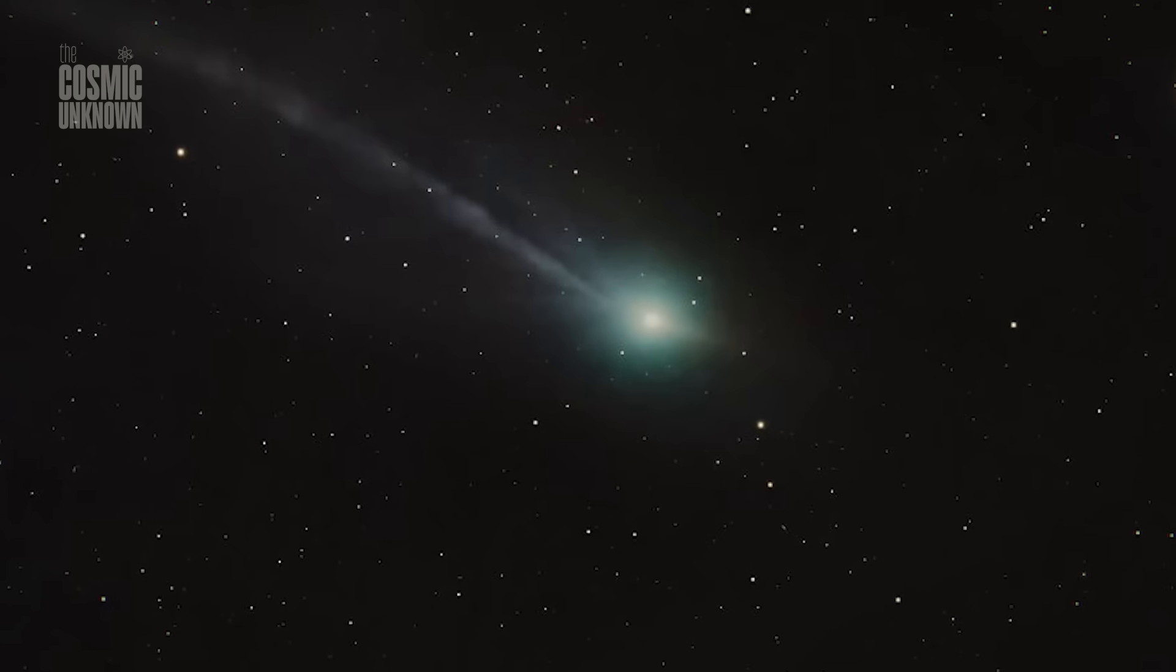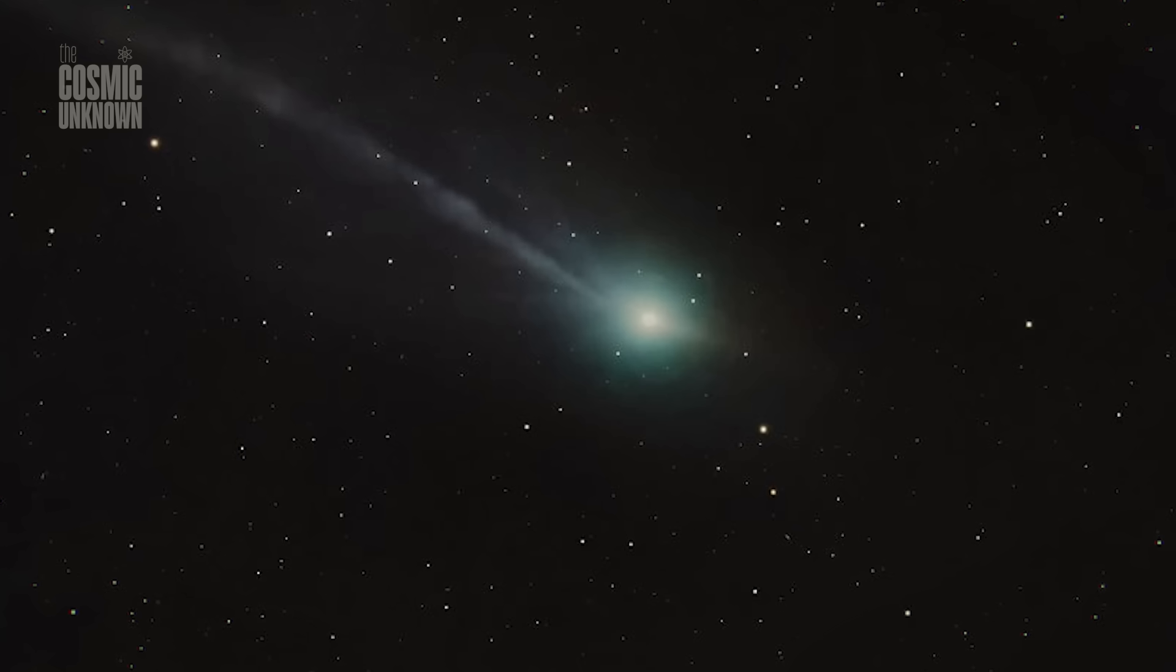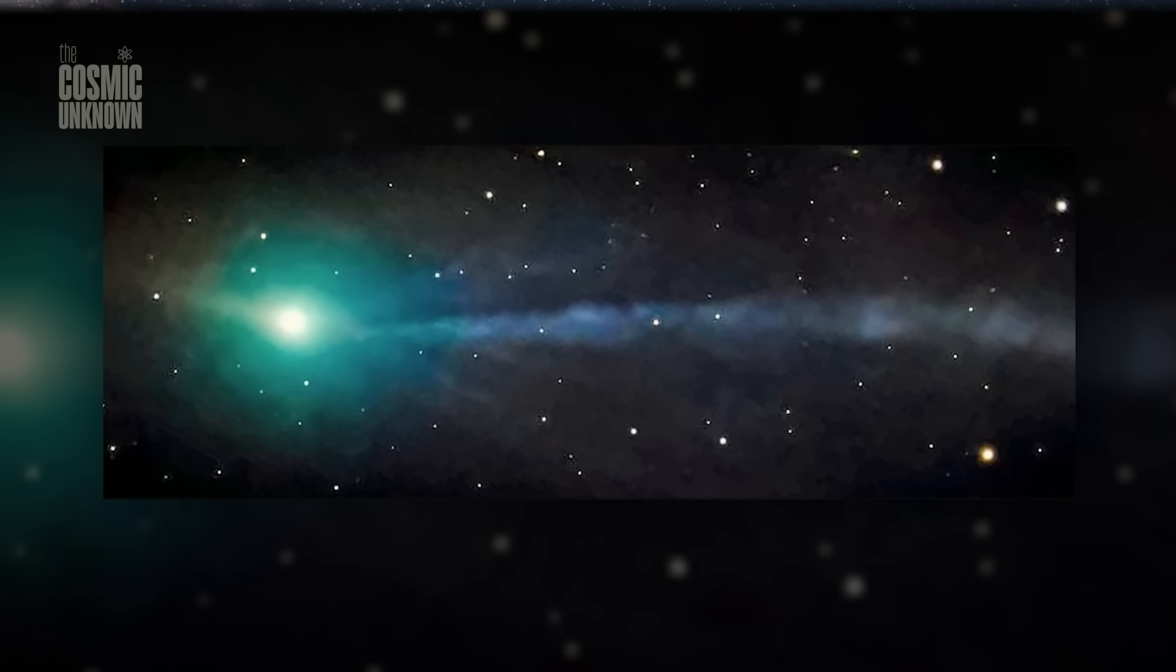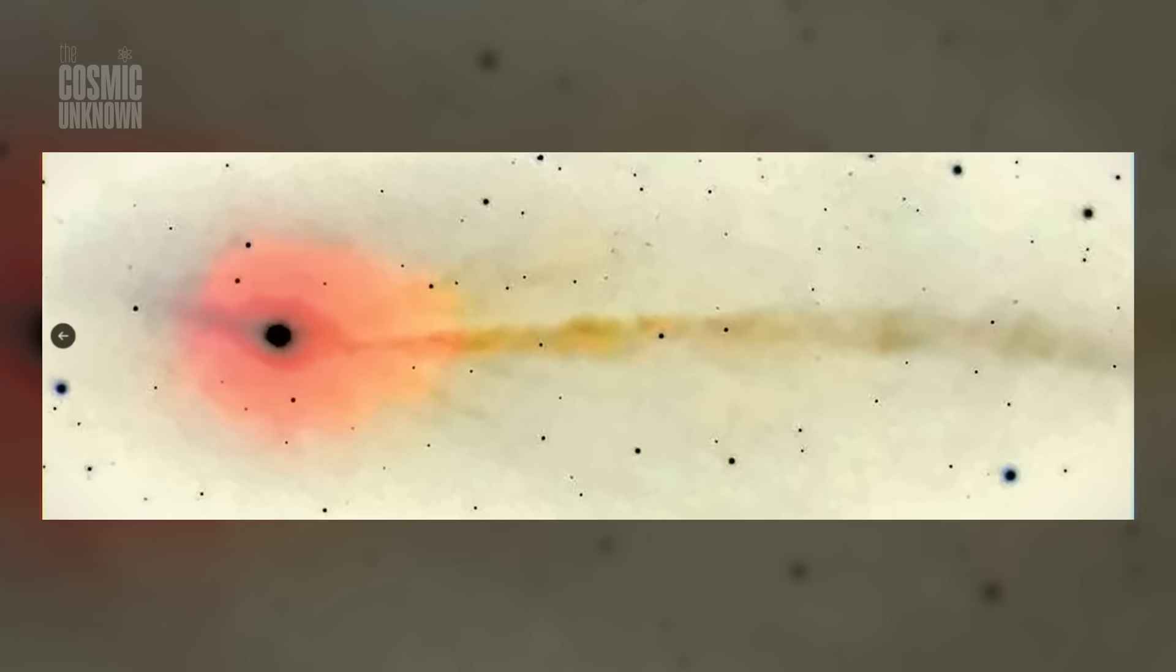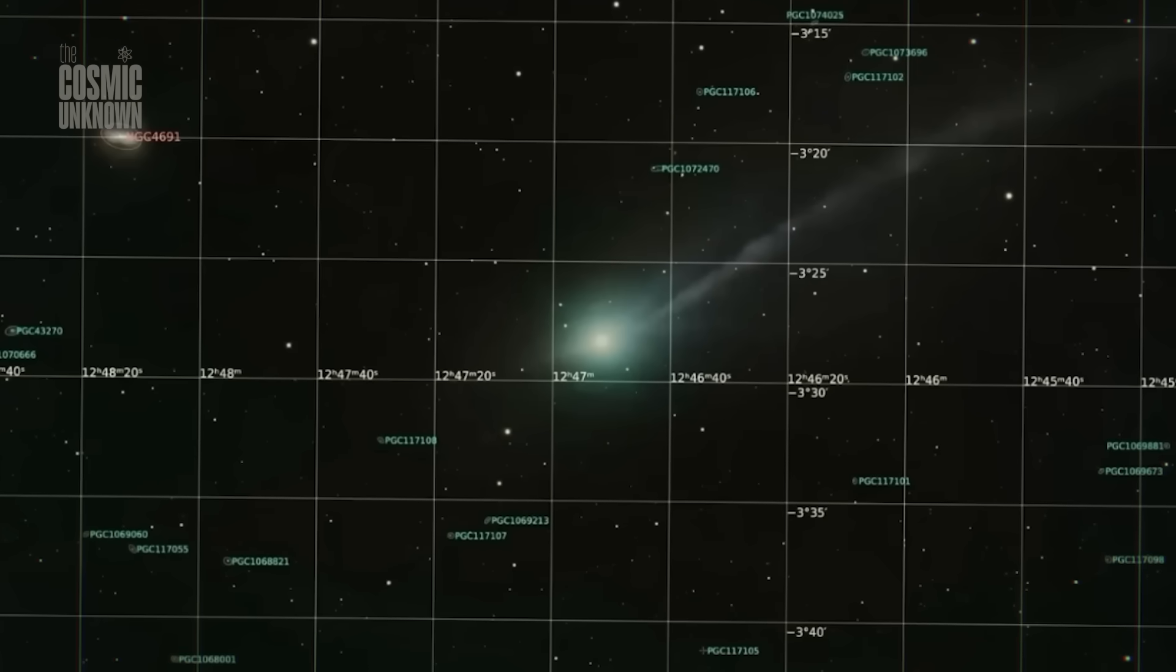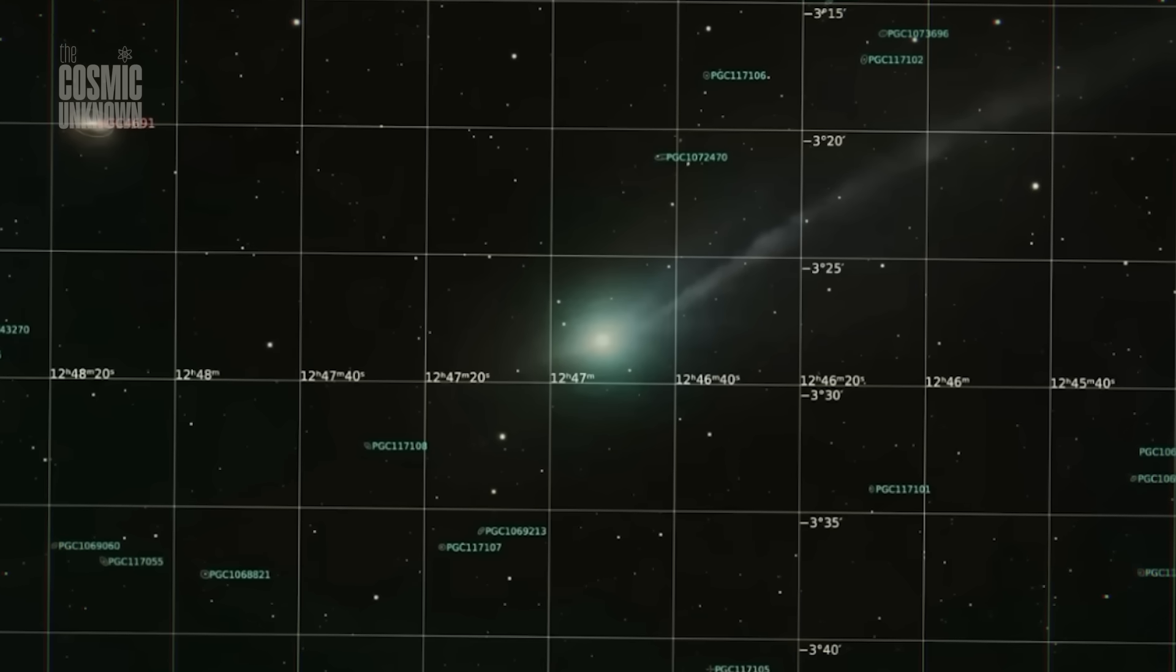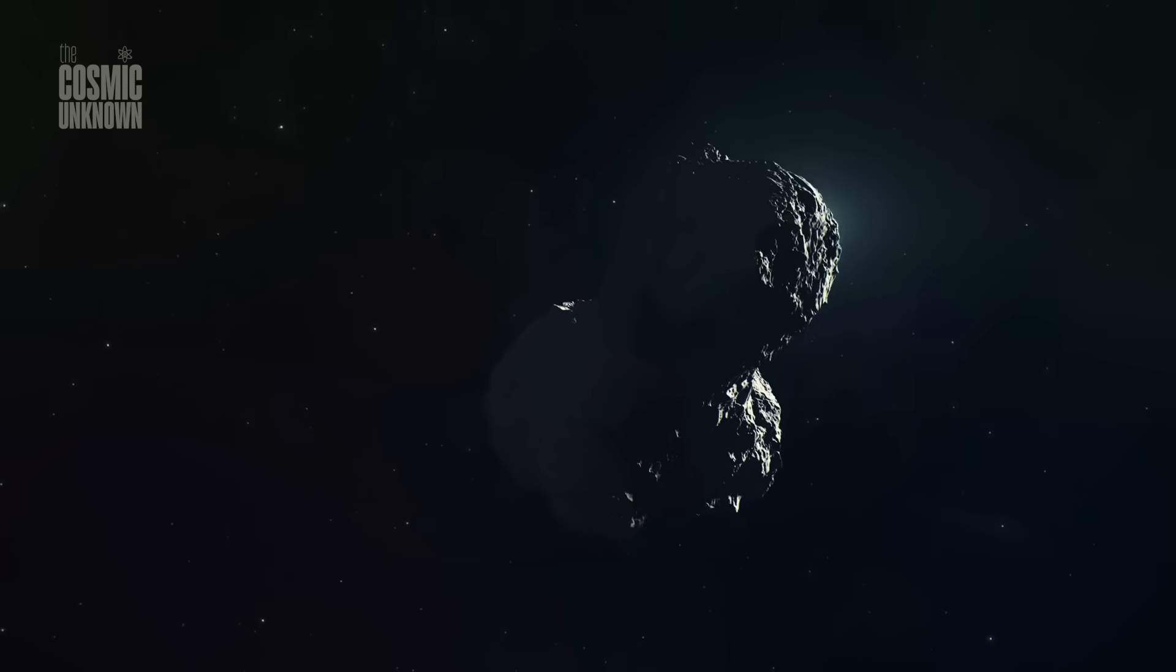Even with all these new views and all the small changes people have been noticing, 3i Atlas still feels like one of those objects that says a lot without ever making a real sound. This latest image gave us the clearest picture so far—a calm frame that finally shows the shape we've been trying to see for weeks—but it didn't close the story the way some people hoped. If anything, it made the whole thing feel more open, because now we can see the clean structure in front of us while still knowing that the object keeps shifting in little ways every night. And that's the part that stays with you after the image leaves the screen—the idea that something can travel this far, drift through our system, pass by our cameras, and still keep a few things to itself.